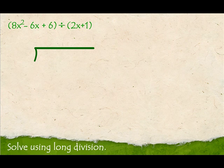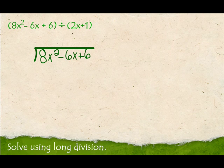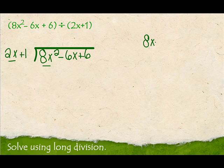Now we're going to divide. The divisor goes out front, and we need to figure out the quotient. To start, I always look at the first term in both. We're going to write 8x² divided by 2x and reduce that. 8 divided by 2 is 4, x² divided by x is x. So 4x goes right here.